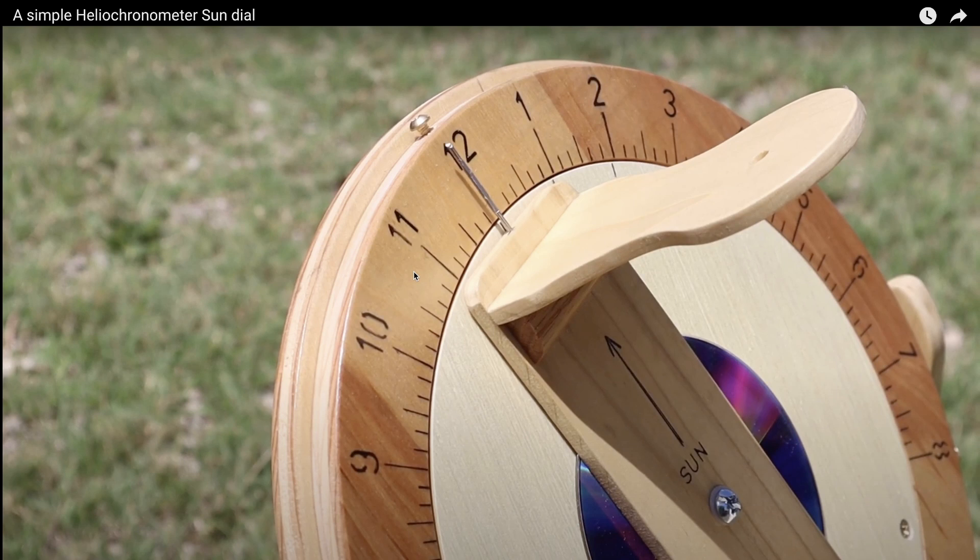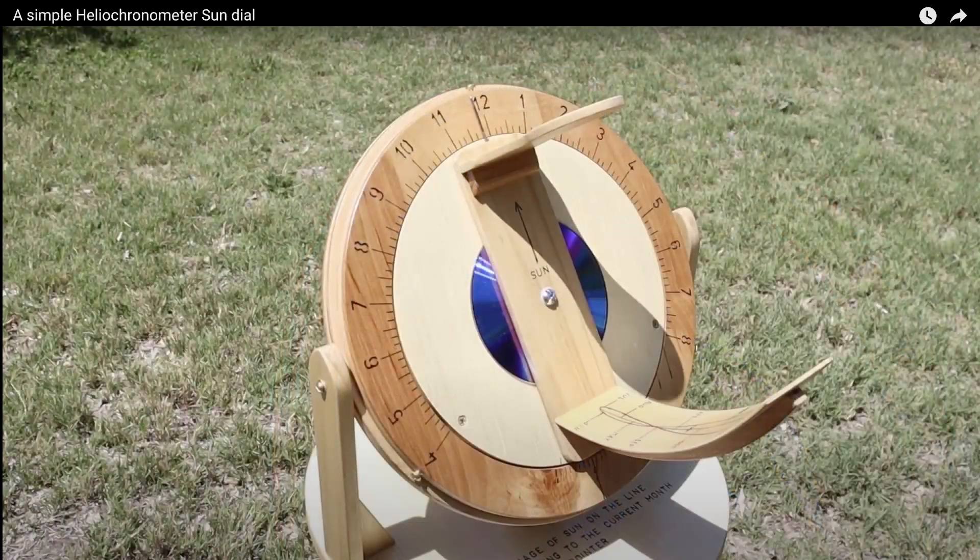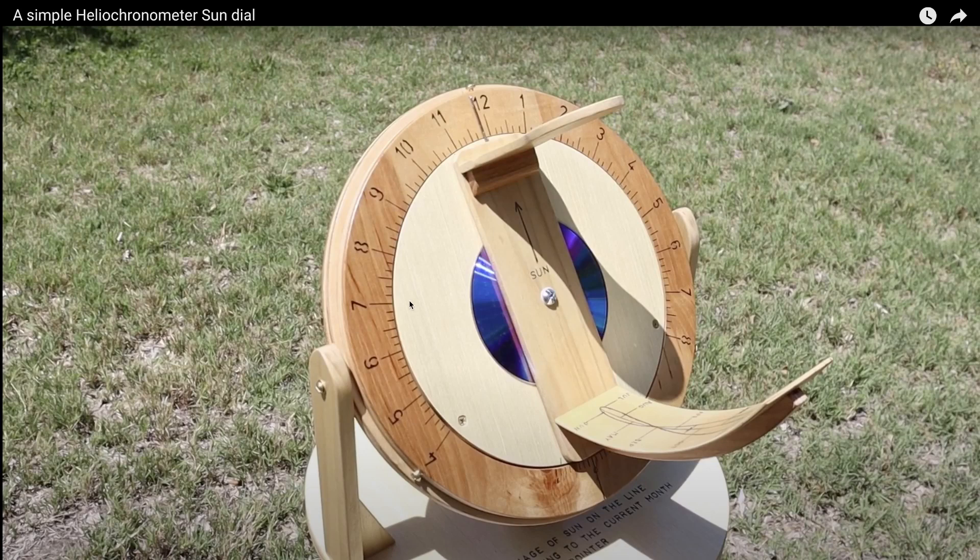Another interesting feature of this heliochronometer is that this dial is movable. So when you switch from standard time to daylight savings time, you can loosen this screw and rotate that entire dial over to make 12 o'clock standard time read one o'clock daylight savings time.